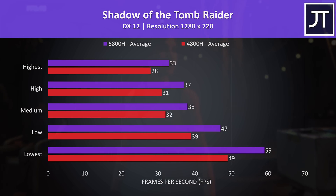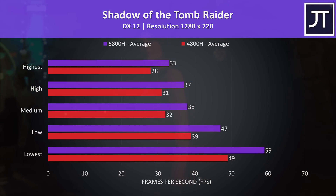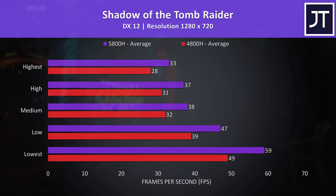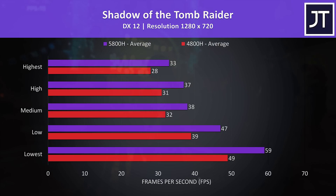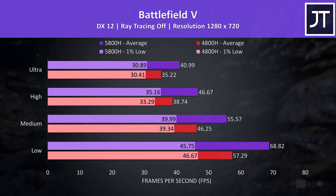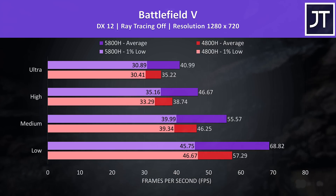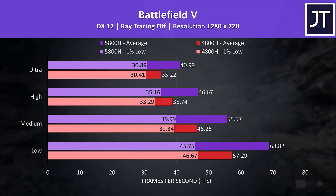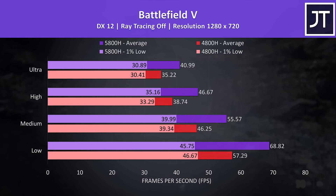Shadow of the Tomb Raider was also tested with the game's benchmark, and at the highest setting preset the difference was extremely close to the last game, with the 5800H reaching an 18% higher average frame rate. Lowest settings was close to 60 FPS with Zen 3, presumably as this is an older game compared to Cyberpunk and Red Dead Redemption 2. Battlefield 5 was able to surpass 60 FPS at low settings 720p with the 5800H — quite playable — and even Zen 2 wasn't too far behind. At the highest ultra setting preset, the 5800H was reaching 16% higher average FPS compared to the 4800H.